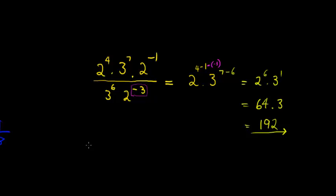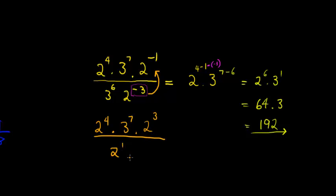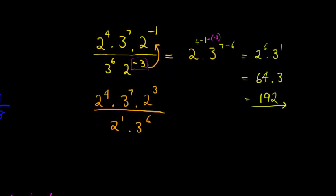Another way you could have done it is to simplify the numerator and denominator separately, moving any negative exponents to the other side so they become positive. So this can become 2 to the power of 4 times 3 to the power of 7 times 2 to the power of 3 in the numerator, and 2 to the power of positive 1 times 3 to the power of 6 in the denominator. One very important thing to remember: you can only apply these laws when you have single terms in the numerator and single terms in the denominator. If there is a plus or minus creating more than one term, you can't use these laws — you would have to factorize first.